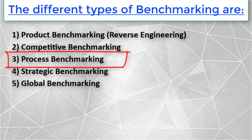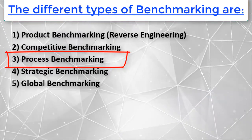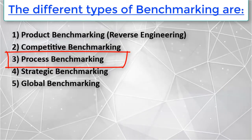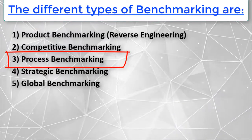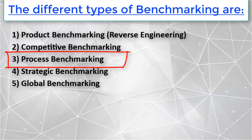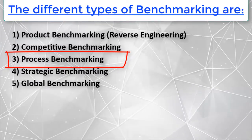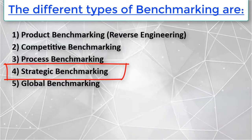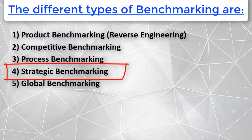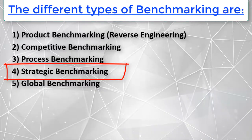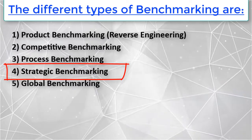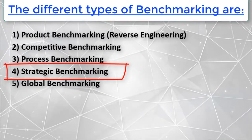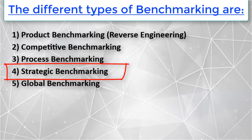The third type is process benchmarking. This involves measuring discrete performances and functionalities against organizations that excel in similar business processes. The fourth type is strategic benchmarking, which differs from operational benchmarking in its scope. It helps to develop a vision of the changed organization and to develop the core competencies that will help sustain competitive advantage.